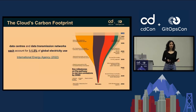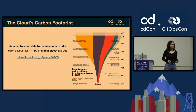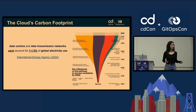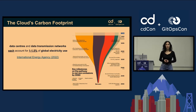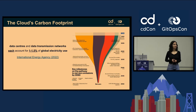So, the cloud's carbon footprint — there are a lot of numbers out there trying to estimate what this is, but it's difficult sometimes to find a reliable source that gives a definitive number, which is always changing and growing continuously in the next years as well. The International Energy Agency, the IEA, has some numbers about data centers and data transmission networks, where each accounts for one to one-and-a-half percent of global electricity usage, which is about three percent.